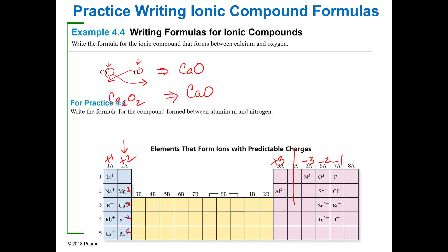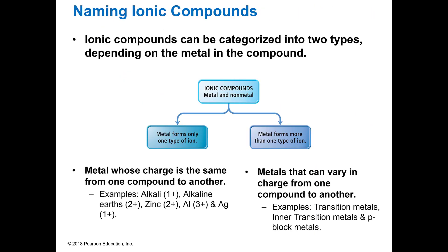For practice, write the formula between aluminum and nitrogen. Aluminum is +3 and nitrogen is −3, so again those are already one-to-one. Sometimes they're going to look funny, but you've got to follow the rules. If you follow the rules, you're good. Just make sure the pluses and the minuses balance out.